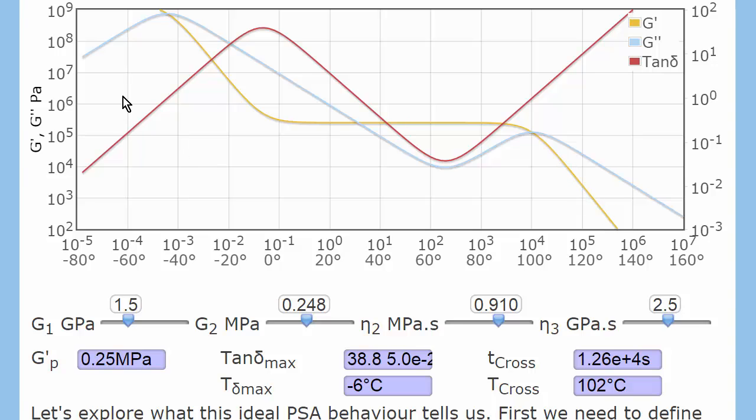Then we have G double prime here in blue. And it has this typical fall off, and then rise and fall. And the ratio of G double prime over G prime is tan delta, which rises and falls.